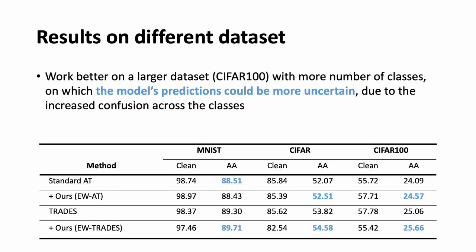We have validated our approach on a range of datasets, including MNIST, CIFAR-10, and CIFAR-100. Our reweighting technique has shown particularly effective results on larger datasets such as CIFAR-100. We conjecture that this is due to the increased number of uncertain examples when the number of classes grows larger. In those circumstances, our entropy-weighted training additionally helps to learn more robust representations by focusing on more difficult instances.